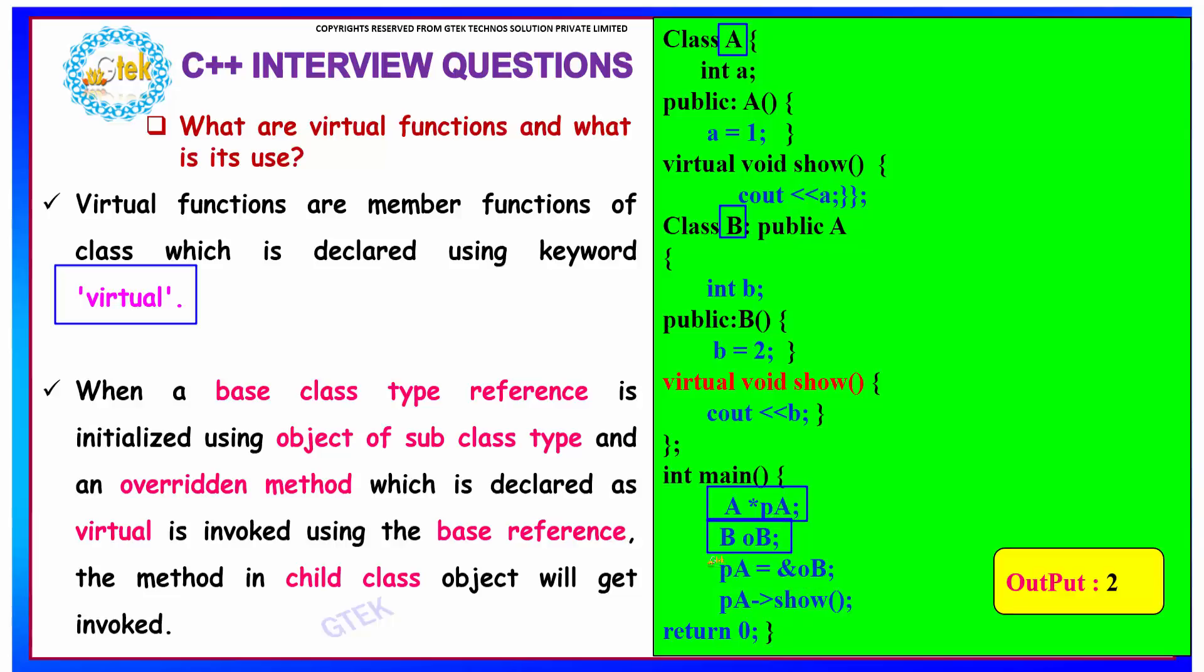So when I do this and then an overridden method which is declared as virtual is invoked using your base reference. Here we have our overridden method which is declared as virtual using your base reference.